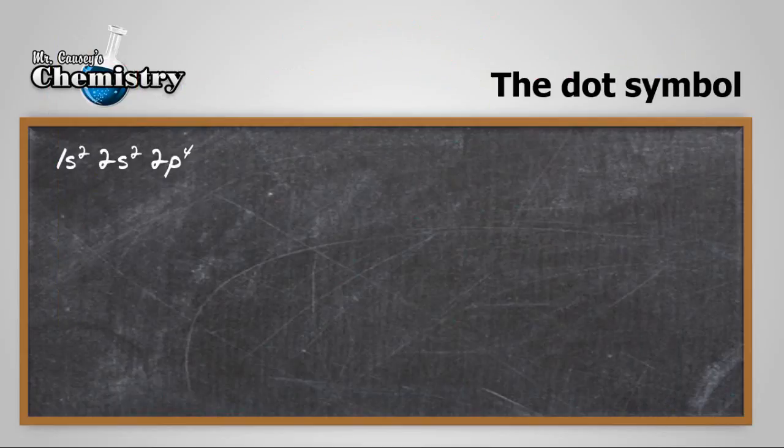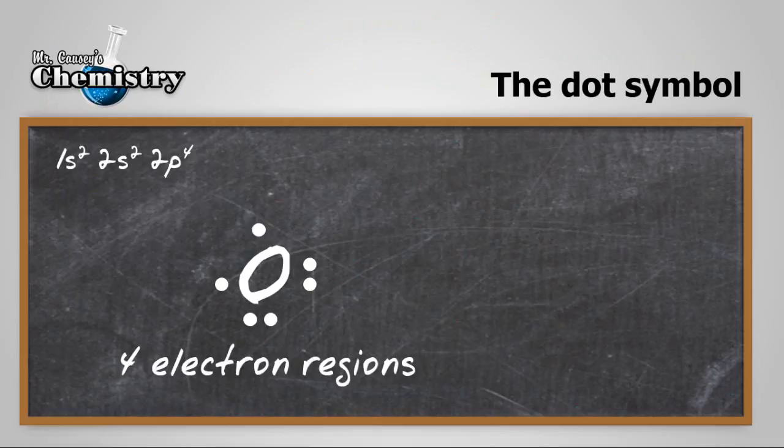So write that on the blackboard. And let's draw the dot symbol, the Lewis dot symbol. There's oxygen and our s orbitals, our p orbitals. And we see we have two bonds and four electron regions, which we need to keep in mind for shape.